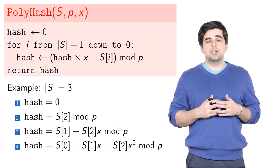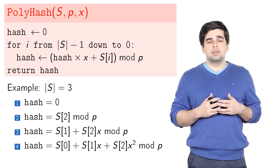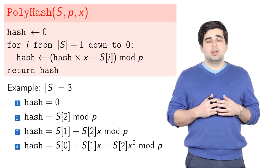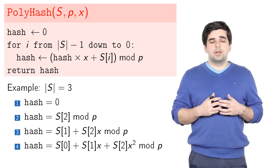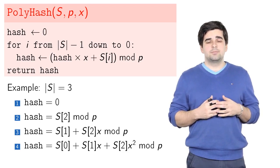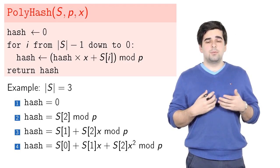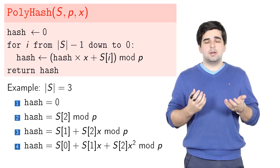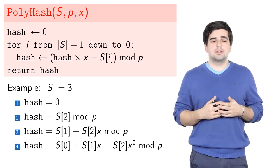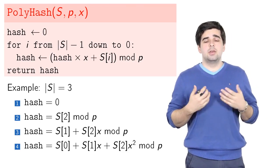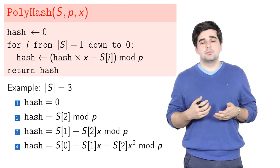In the next iteration, i is decreased and i is now 1. We multiply the current value of s[2] by x and we add s[1] and take everything modulo p. What we get is the same as s[1] + s[2]×x mod p.